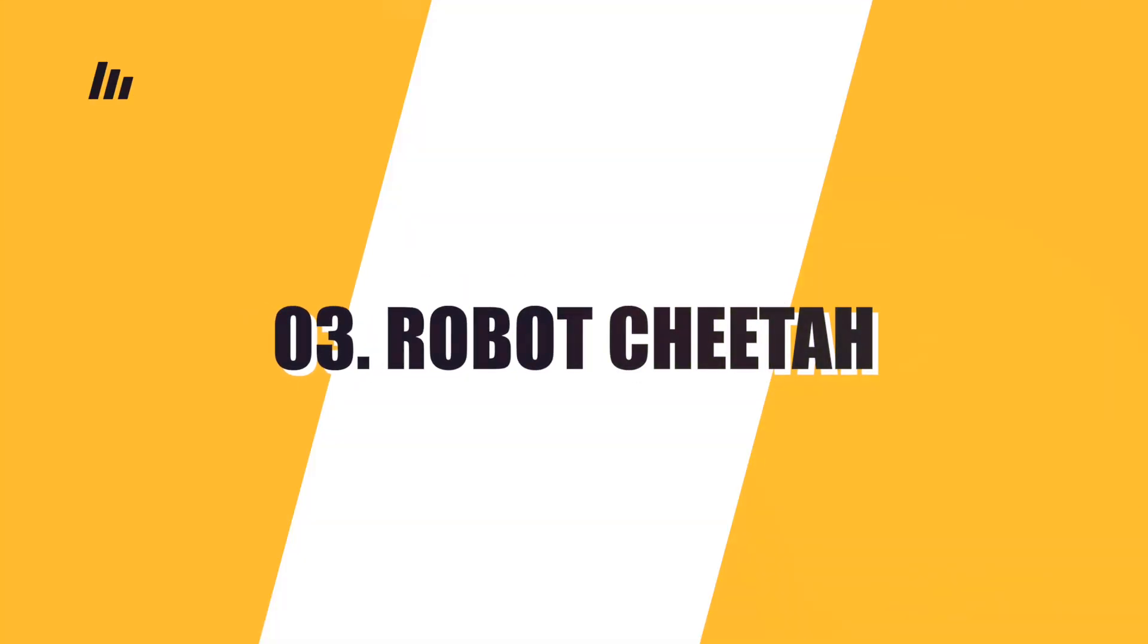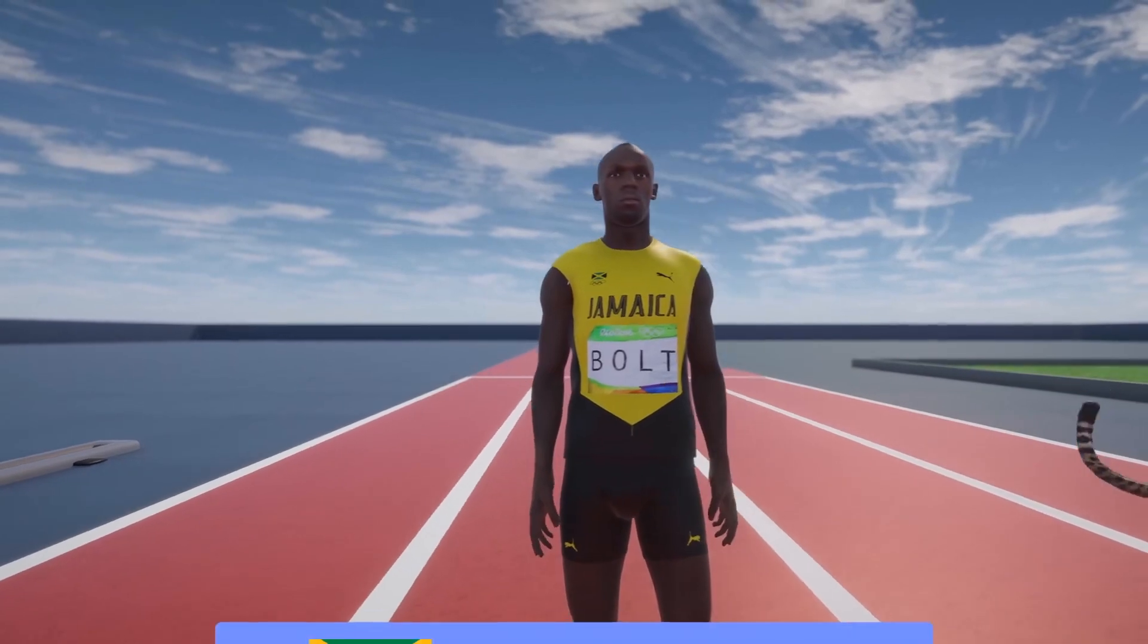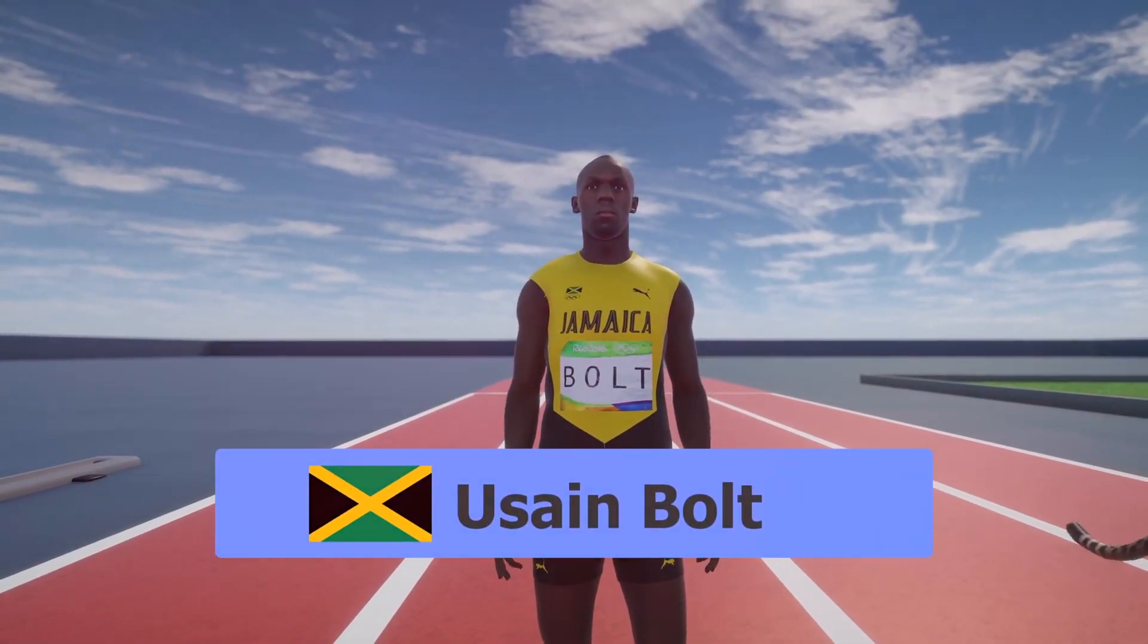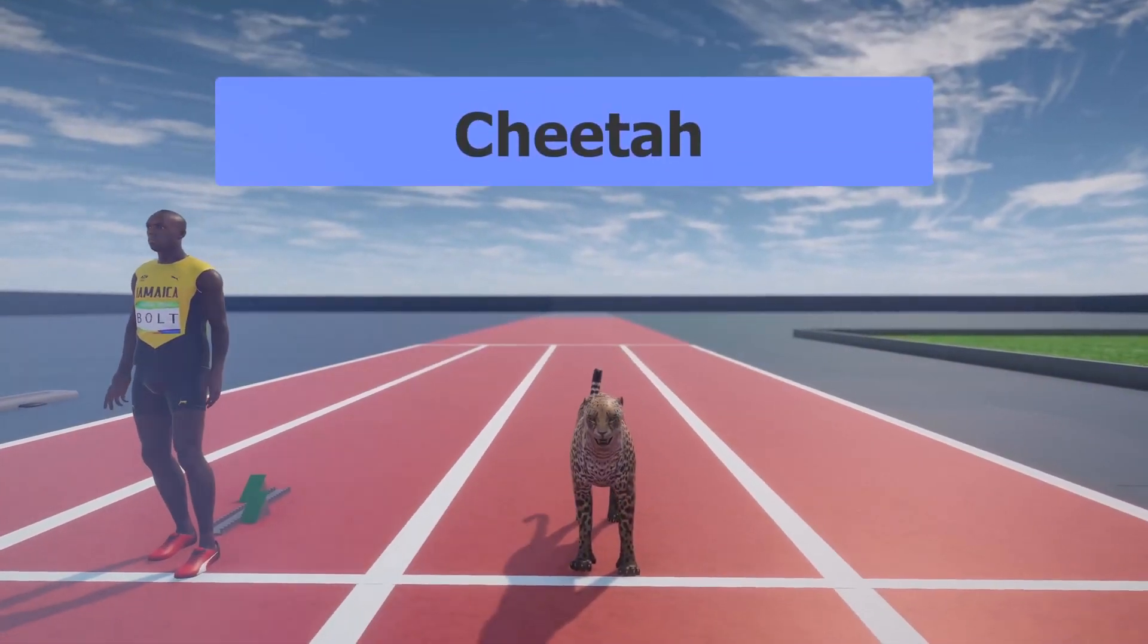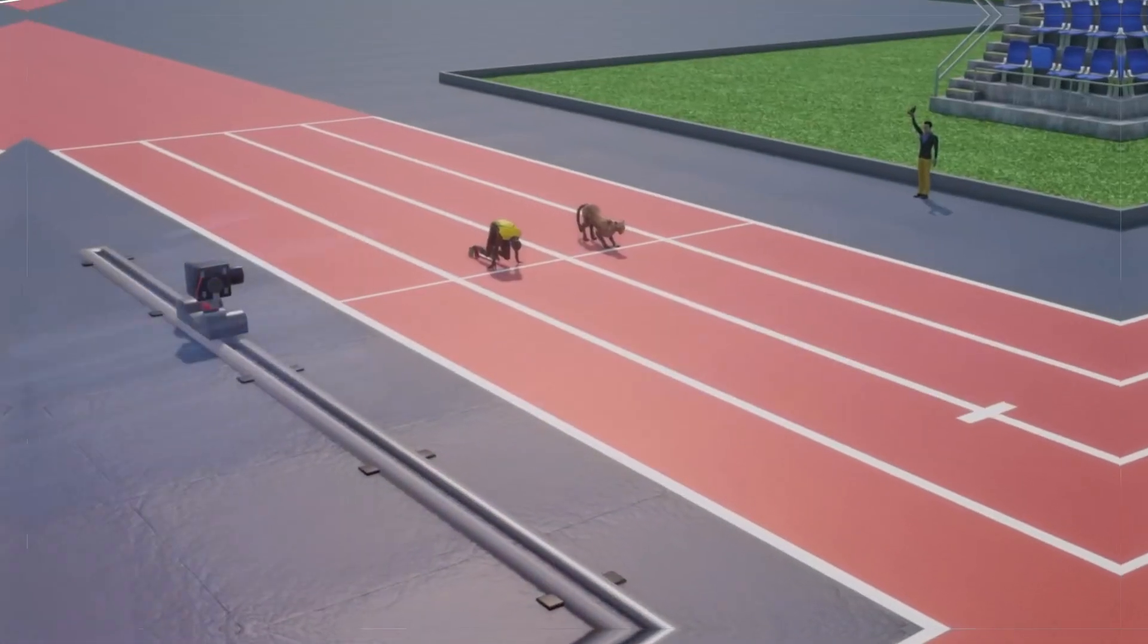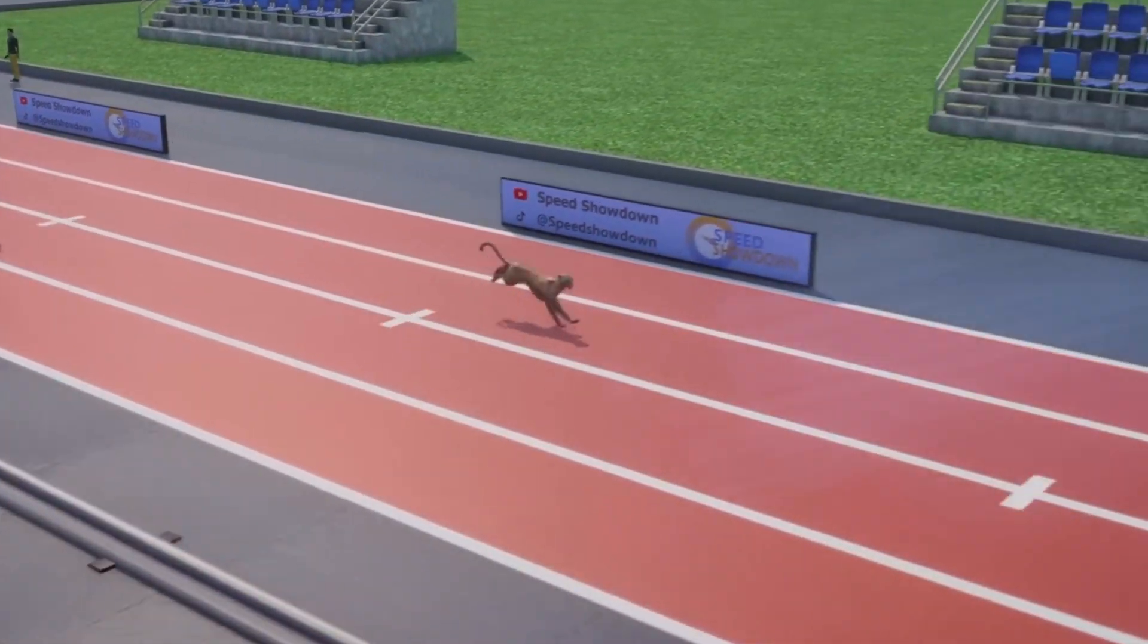Number 3: Robot Cheetah. As you know, the world-famous runner Usain Bolt is capable of overtaking a real cheetah. But a cheetah robot can easily catch up with and outrun them both. With the fastest predator, the robot has little in common but speed.